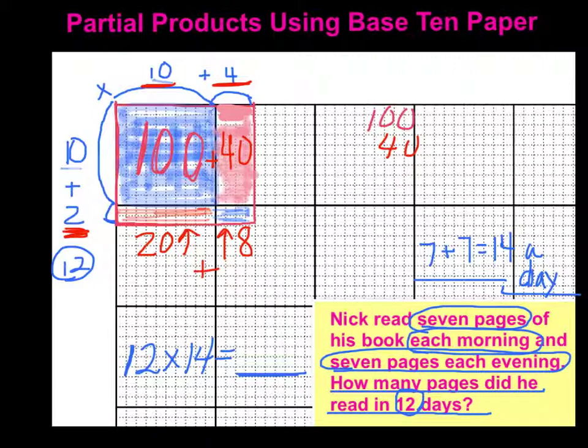So I now have 100 plus 40 plus the 20 from right there plus 8. And that will give my answer of what 12 times 14 is because that is the entire area here. So that's 8, 4 plus 2 is 6, 1 plus nothing is 1.